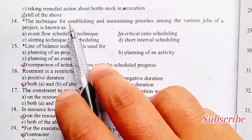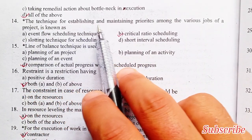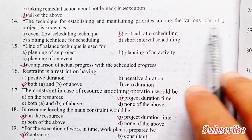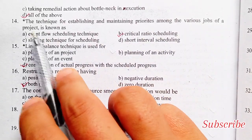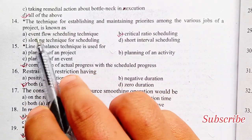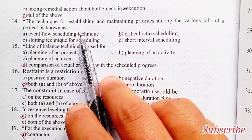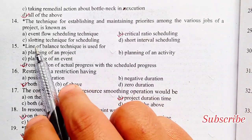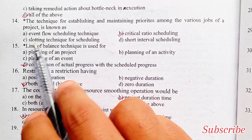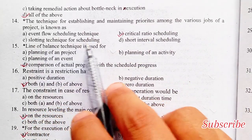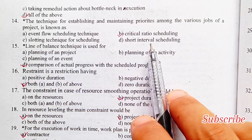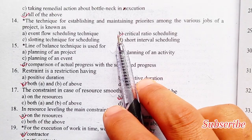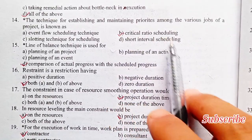The technique for establishing and maintaining priorities among various jobs of a project is known as: event flow scheduling technique, critical ratio scheduling, slotting technique for scheduling, or short interval scheduling. Option B is the right answer — critical ratio scheduling.